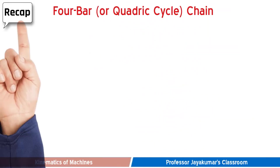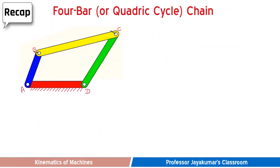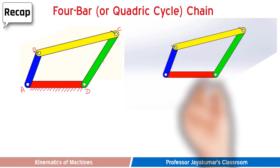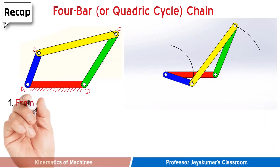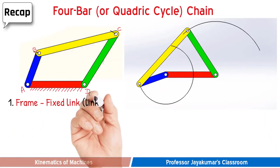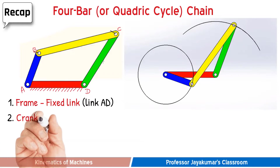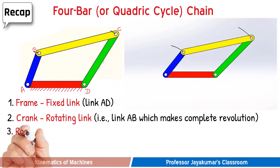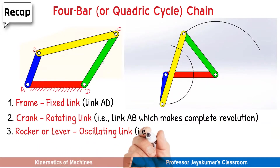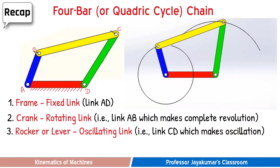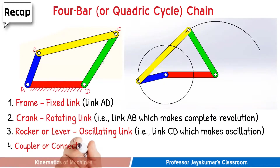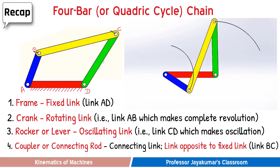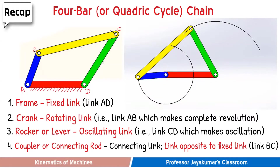We know that a 4-bar chain is the most fundamental and the simplest kinematic chain. The four links of a 4-bar chain are: frame, which is the fixed link; crank, which is the link that makes complete revolution; lever or rocker, which is the link that makes oscillation; and coupler, which is the link opposite to the fixed link and not connected to the frame.